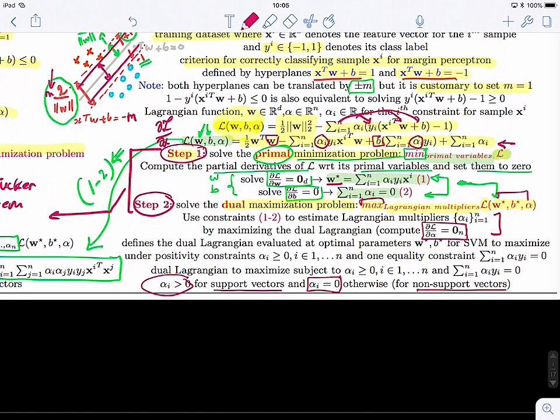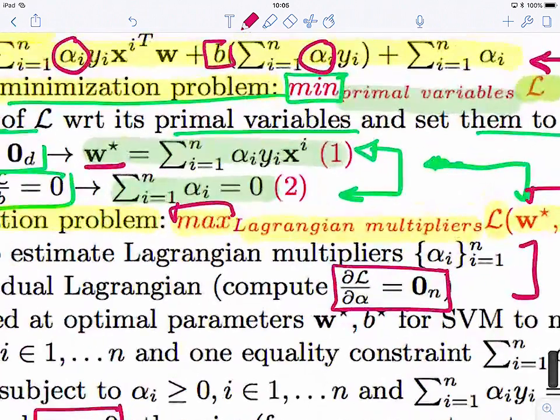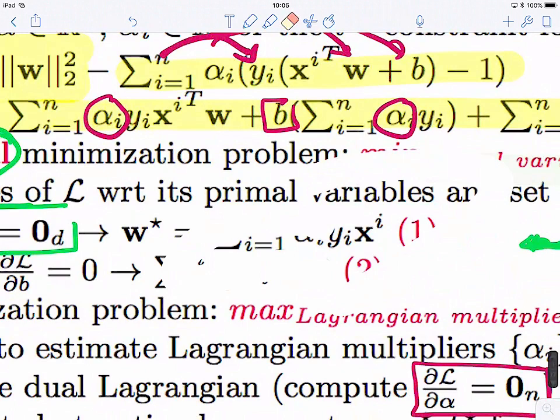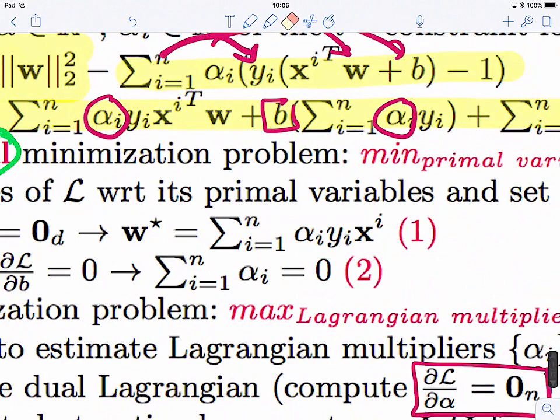So we discovered that alpha i will be strictly positive for support vectors, and alpha i will take zero for non-support vectors. This is very important because it tells us that the W, we can explicitly compute it now because we have the alphas. Without estimating the alphas, we can't have our W.